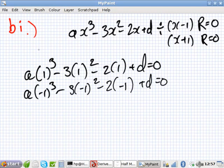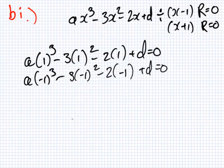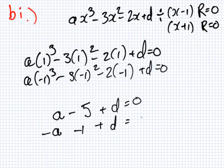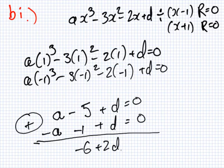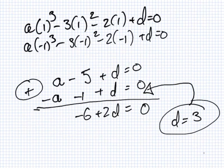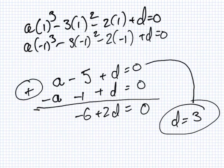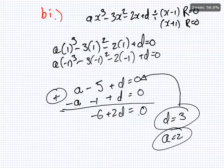It's the remainder theorem. This is just going to be a minus 3 minus 2, so that's minus 5, plus d equals 0. And this one here would be minus a minus 3 plus 2, so that's minus 1 plus d equals 0. So if you add these together, minus 6 plus 2d equals 0, so d equals 3. And if you put d equals 3 in here, minus 5 plus 3 is minus 2, so a is 2.